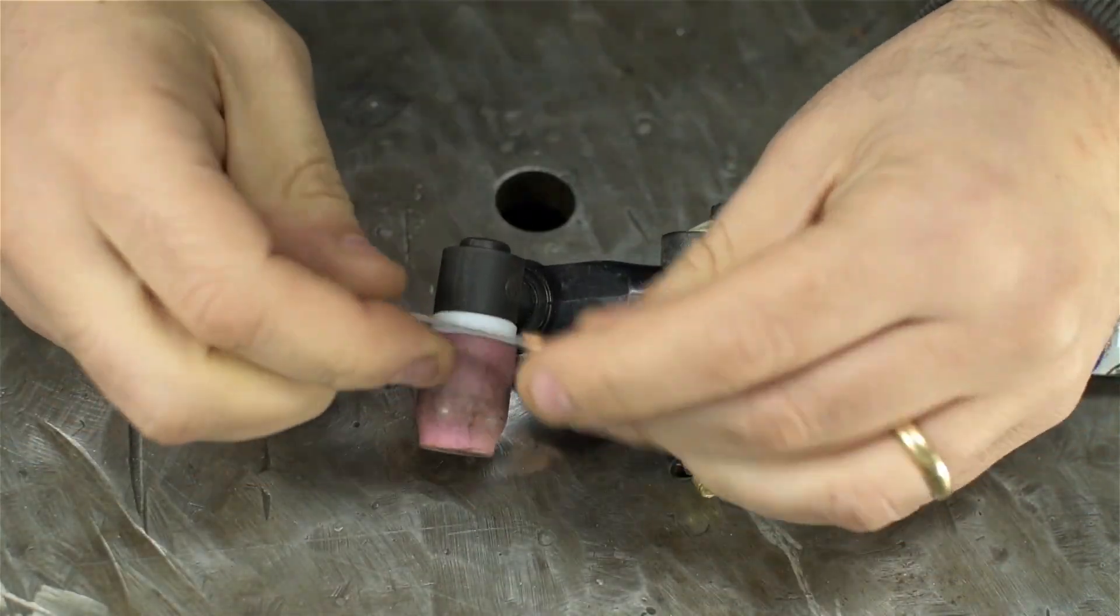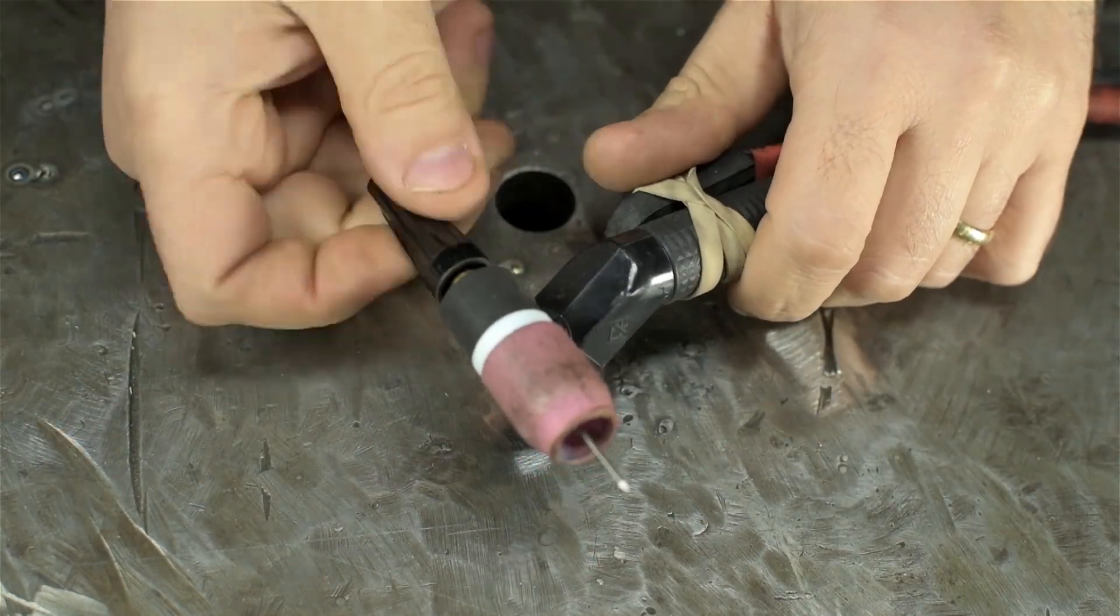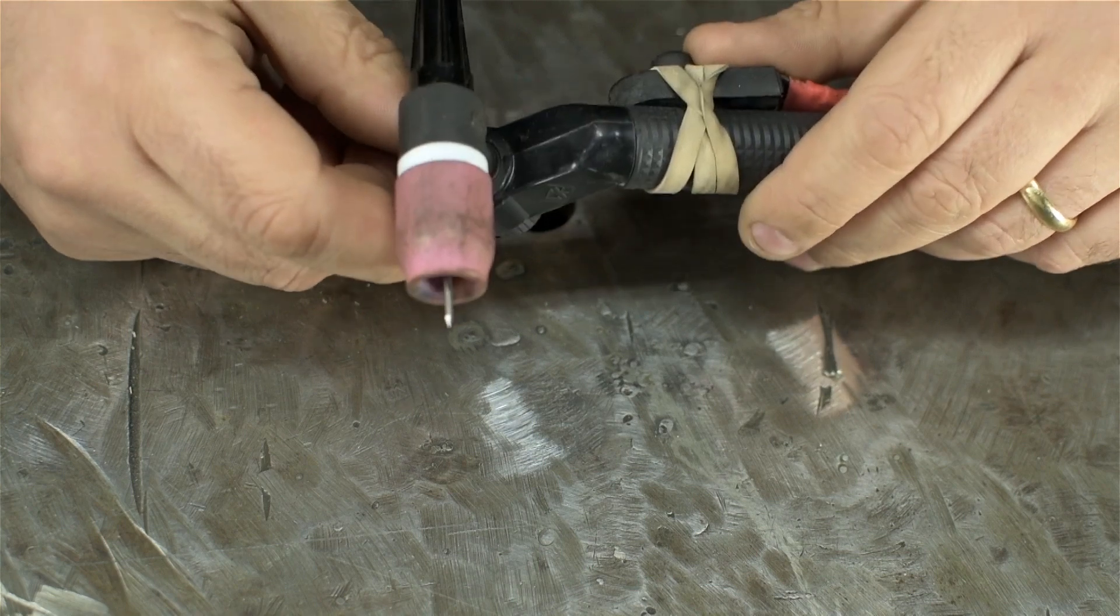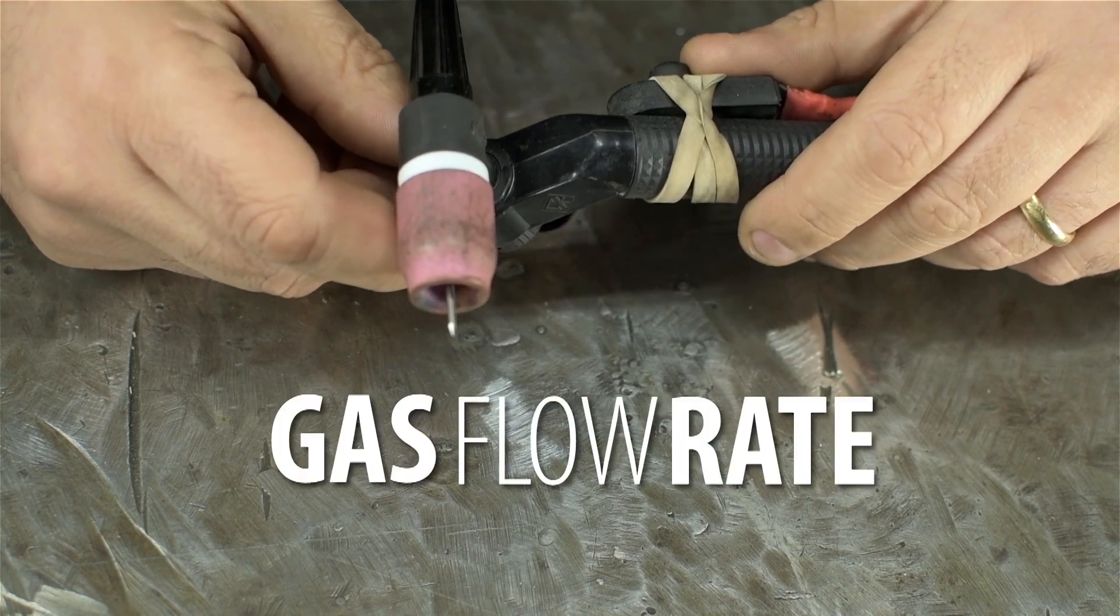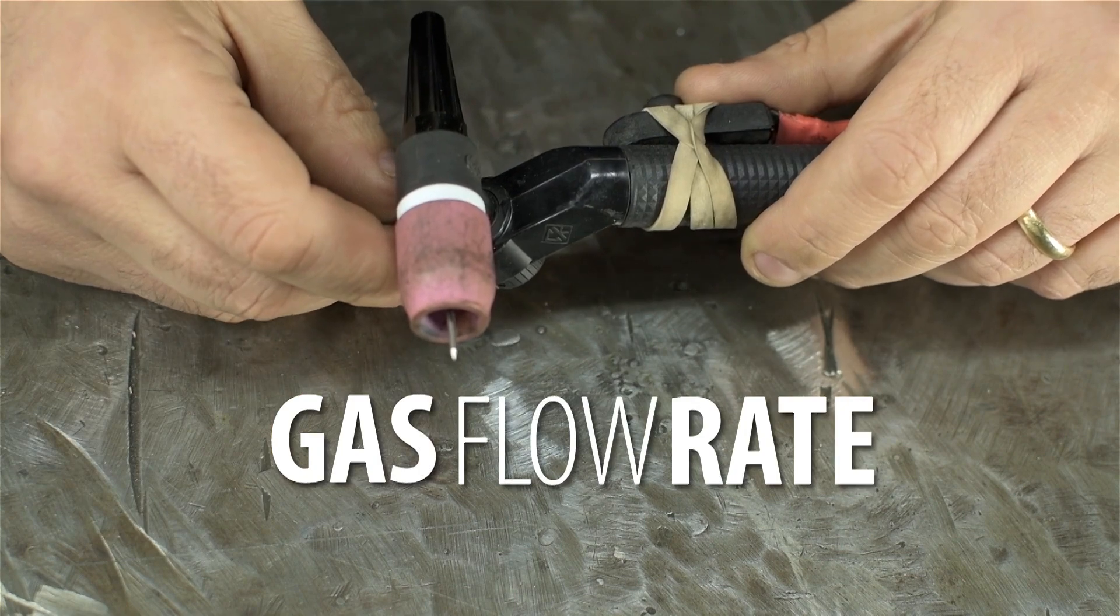Quick video today. I've already got all this stuff out, I think I can get this point across pretty quick. Let's talk about setting the gas flow rate for TIG welding. This goes for any welding that uses a shielding gas, but we'll be using TIG as our example.